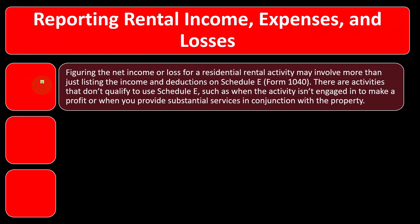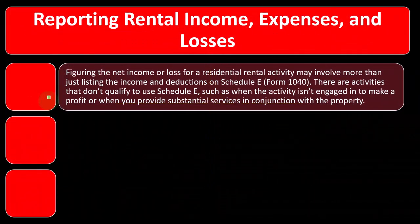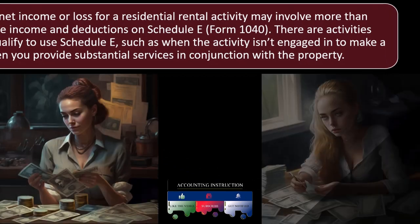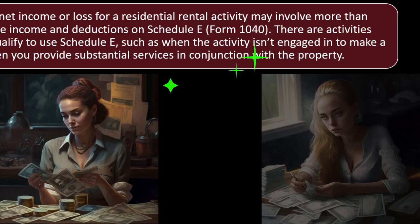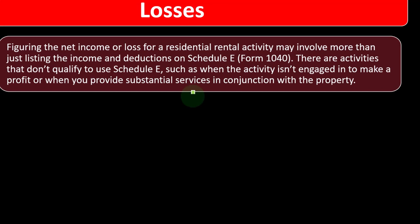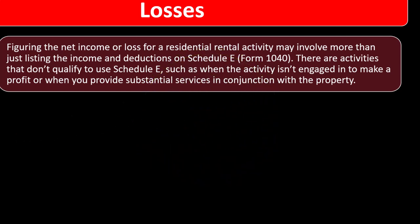There are activities that don't qualify to use Schedule E, such as when the activity isn't engaged in to make a profit or when you provide substantial services in conjunction with the property. If it wasn't engaged for profit, you're likely going to have losses, and the IRS doesn't want to pay for your hobby losses. If there are substantial services involved — like a hotel — you're not just making passive money by renting it out. You're actively providing services, maintaining the hotel, and you might be subject to Schedule C and self-employment tax.